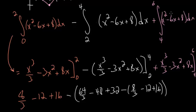Now we just need to do this last evaluation. For the upper bound of 6, we have 6 cubed, which is 216 over 3. Plugging in 6 here, we get minus 3 times 36, which is minus 108, and then plus 8 times 6, which is 48. Subtracting off this lower bound of 4, we get 4 cubed, which is 64 over 3, minus 3 times 16, which is 48, and plus 8 times 4, which is 32.